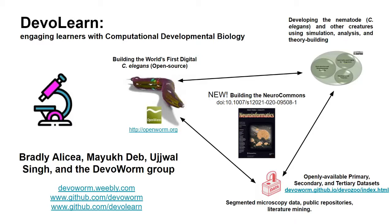You'll find github.com/DevoWorm, our GitHub repository with code for different projects, and github.com/DevoLearn where you'll find not only the DevoLearn software but the entire platform. So what is DevoWorm? One of the things we do is work with the Open Worm Foundation — we're the developmental arm of that foundation, whose mission is to build the world's first digital C. elegans in an open source fashion.